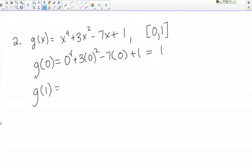If I plug in 1, I've got 1 to the 4th plus 3 times 1 squared minus 7 times 1 plus 1. So that's 1 plus 3 minus 7 plus 1. That's 4 minus 7, so that's negative 3 plus 1, so that gives me negative 2. Okay, so g of 0 is 1, and g of 1 is negative 2.